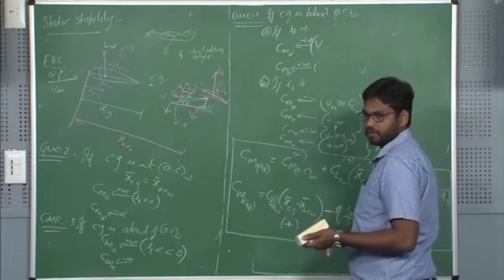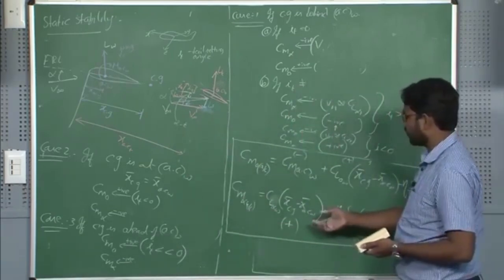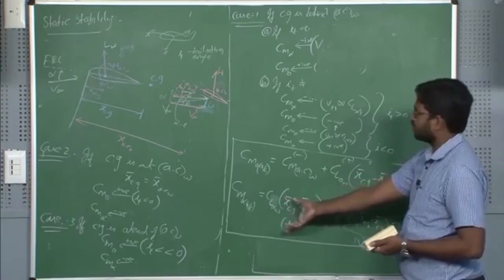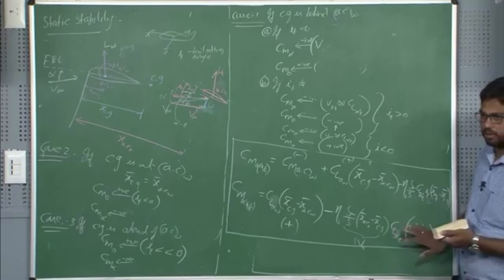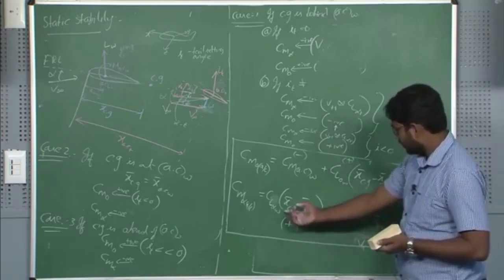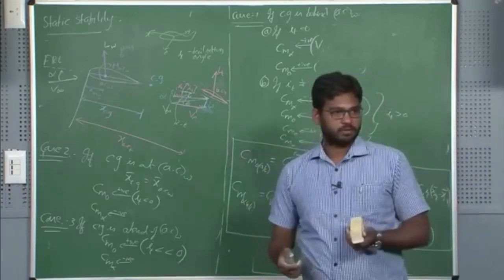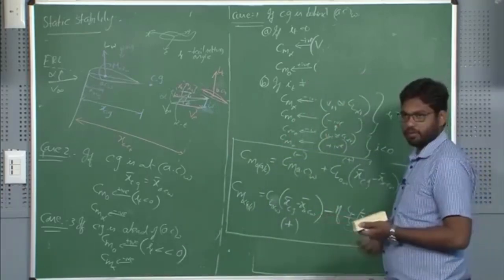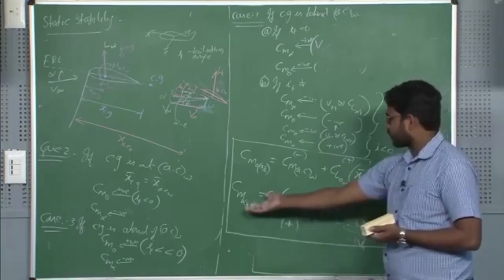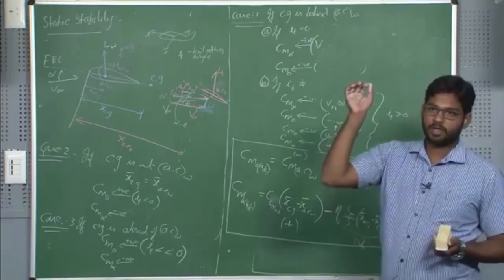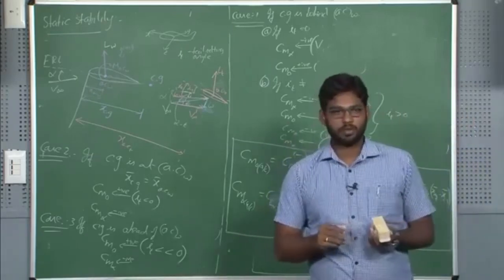When there was no dead weight, the CG was behind the AC. For a wing-alone configuration, this makes CM_alpha positive. If there is no tail, the tail contribution is not present. So with CG behind the AC, CM_alpha is positive — the system becomes unstable, which is why it was flipping. By placing the dead weight, I brought the CG close to the AC, making CM_alpha approximately zero — the system became neutrally stable.